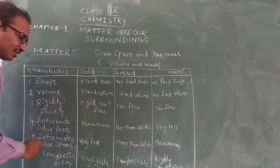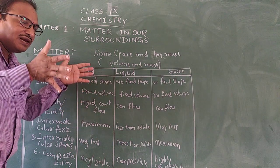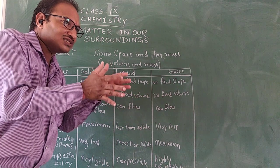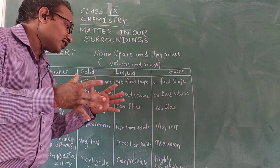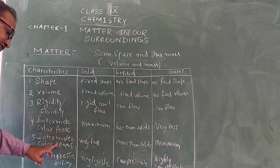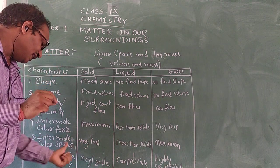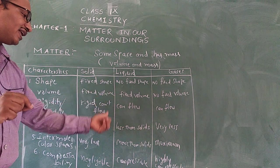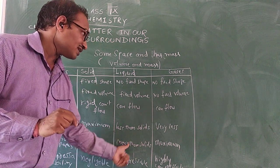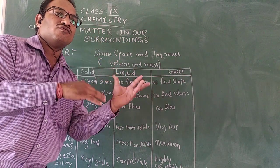Why are solids rigid? In solids, strong intermolecular forces are present between the particles. In liquids, intermolecular forces are lesser than in solids. In gases, intermolecular forces are very, very less. For intermolecular spaces: in solids, particles are side by side — very less space. In liquids, spaces are more than solids but less than gases. In gases, intermolecular spaces are maximum, which is why gas particles move away from each other.